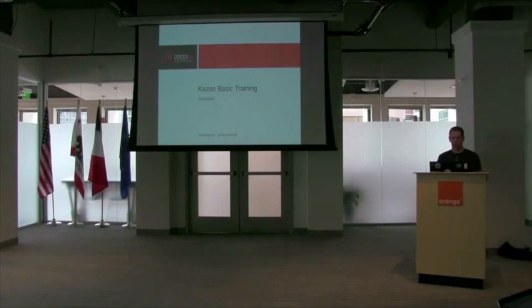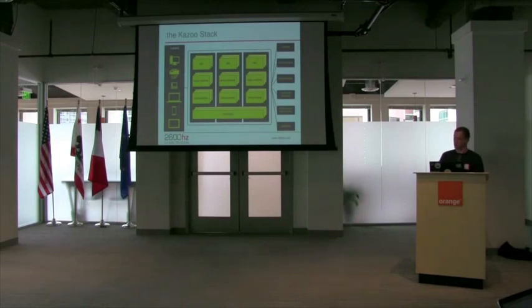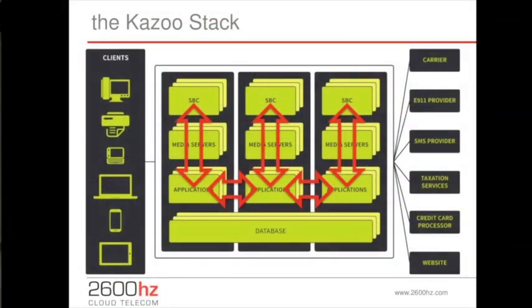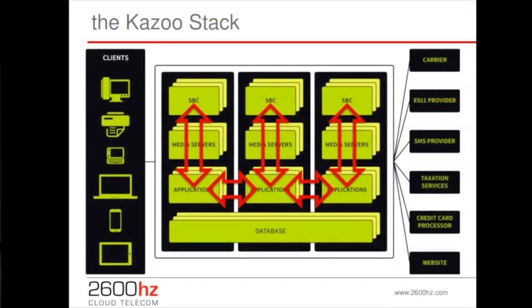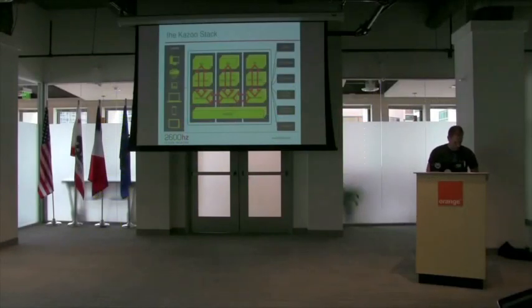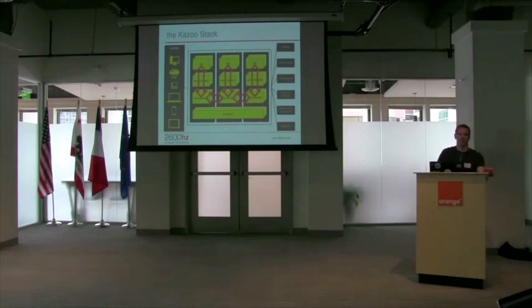RabbitMQ is the glue that binds. Representing where Rabbit lives is tricky because it kind of lives everywhere. The arrows connecting applications and the SBC should not intersect the media servers — FreeSwitch does not talk to Rabbit directly; everything goes through eCallManager. However, Kazoo does talk directly through Rabbit to Kazoo applications, and the Kazoo applications themselves communicate with each other via Rabbit.